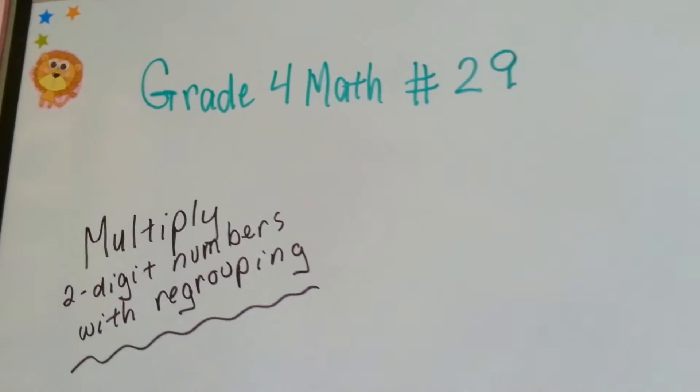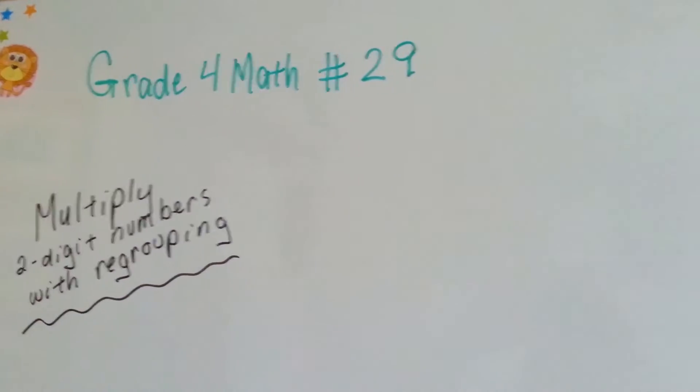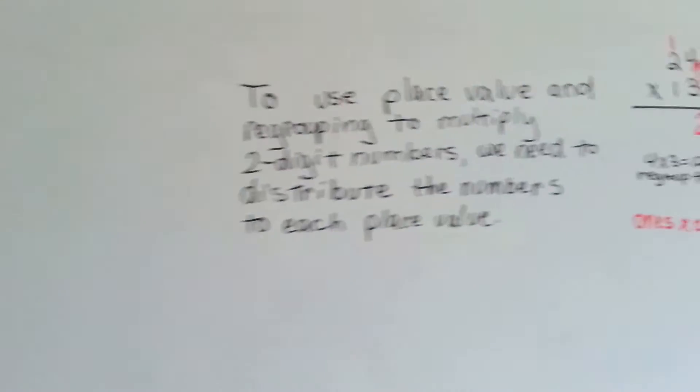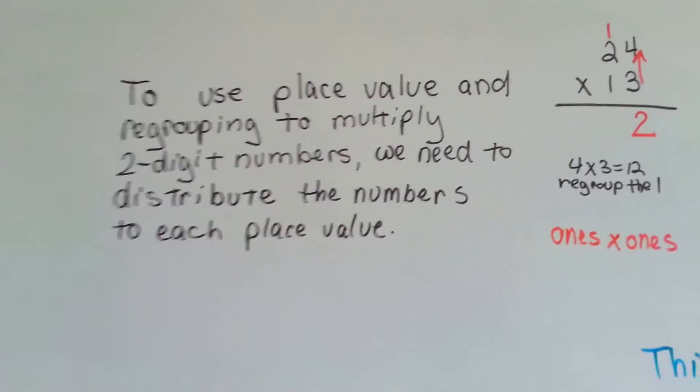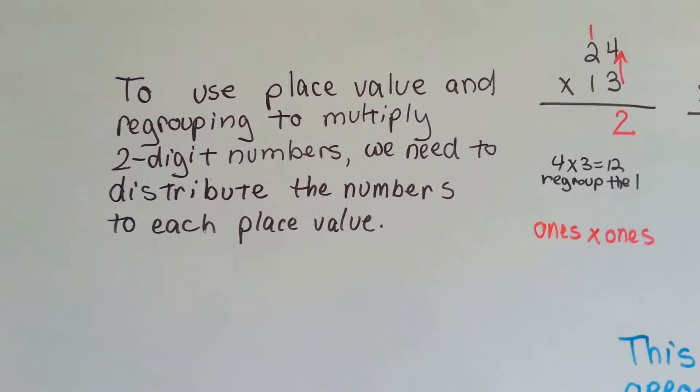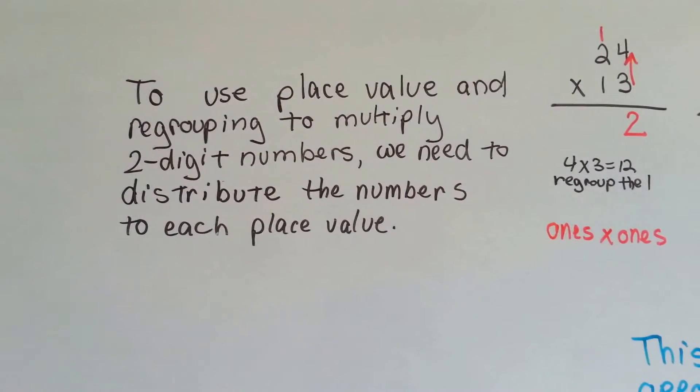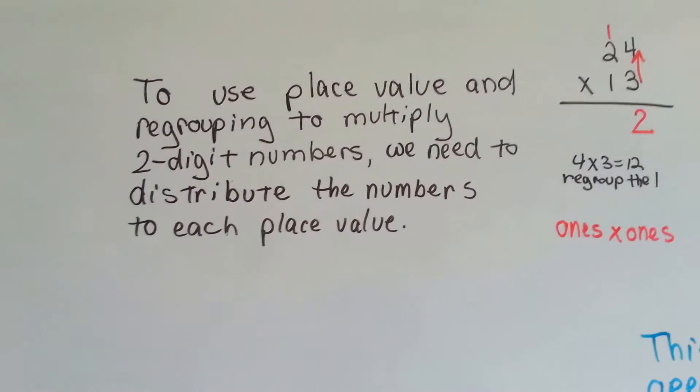In our last video, we multiplied two-digit numbers by using partial products. Now we're going to use place value and regrouping, and in order to do that, we need to multiply the two-digit numbers by distributing them to each place value.